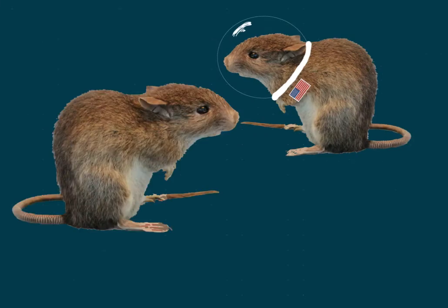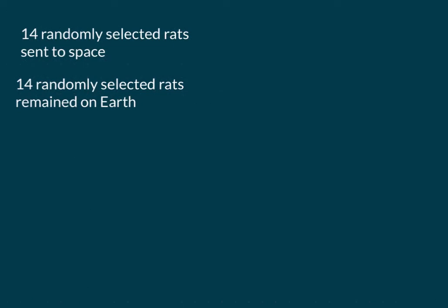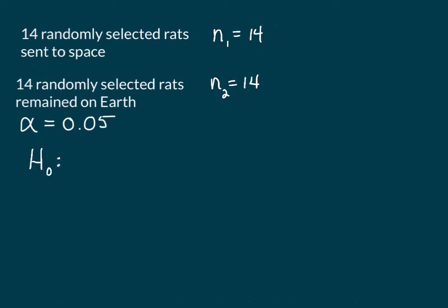Instead, we are going to talk about space rats — randomly selected rats who were sent to space and randomly selected rats who remained on Earth. All other conditions remain the same. Researchers wanted to know if the red blood cell mass of the two groups was different at a significance level of alpha equals 0.05. We know that N for the first group equals 14 and N for the second group equals 14. Our null hypothesis would be that the mean blood cell mass of the first group equals the mean blood cell mass of the second group.